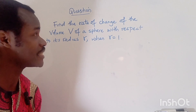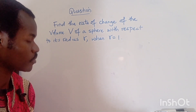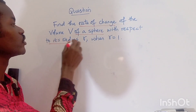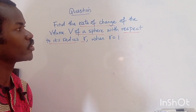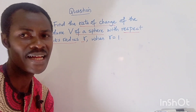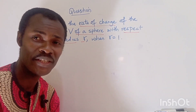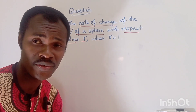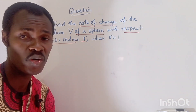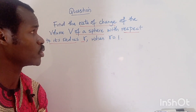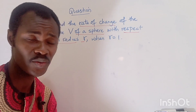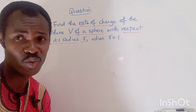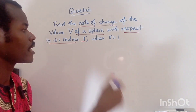Today let's look at this question on the board: find the rate of change of the volume of a sphere with respect to its radius r. When you come across such statements, it means we are looking at calculus. In calculus, when you talk about differentiation, it has to do with things like rate of change.